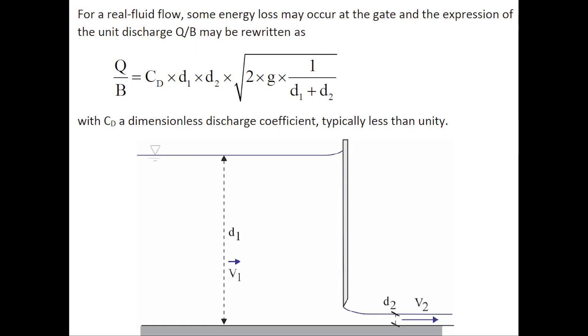For real fluid flow, some energy loss may occur at the gate and the expression of the unit discharge may be rewritten with CD, a dimensionless discharge coefficient, typically slightly less than unity.